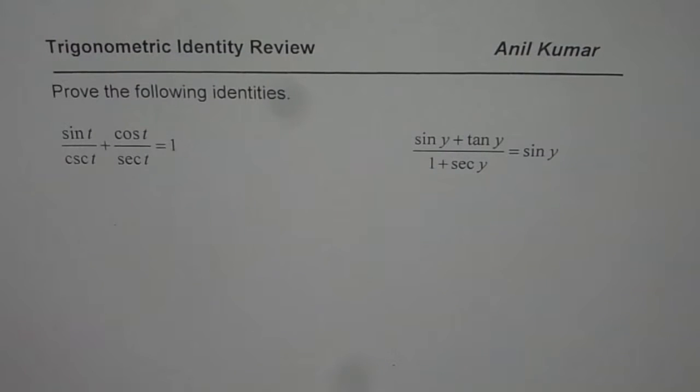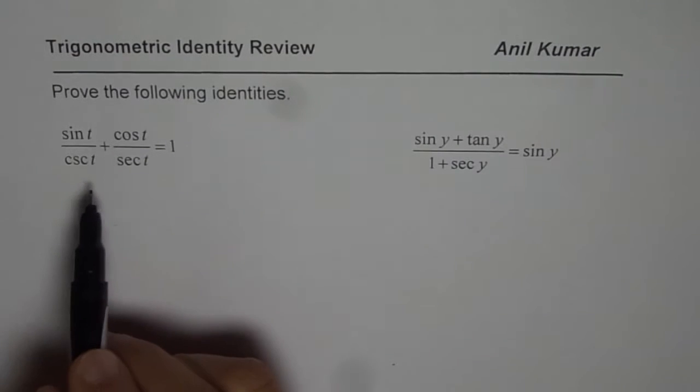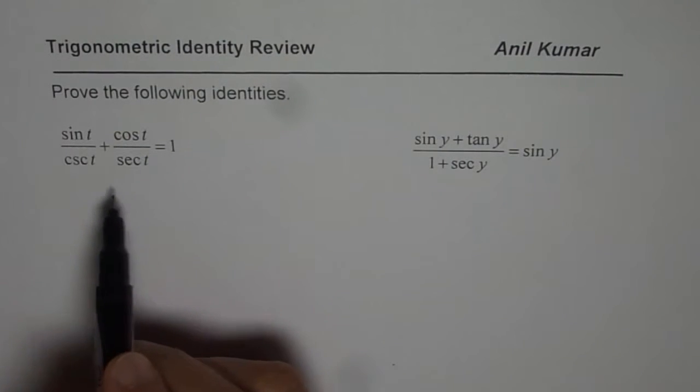As you know, sine, cosine, and tan are primary trigonometric ratios. Cosecant and secant are secondary.